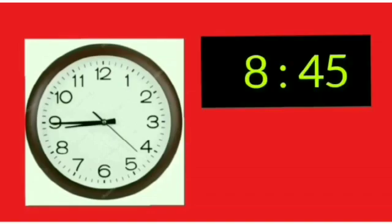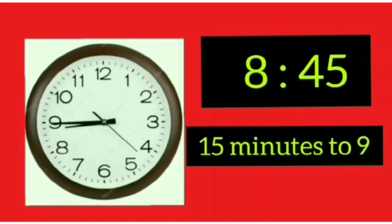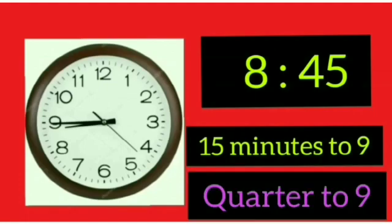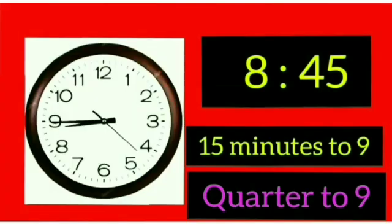Dear students, let us see how to write the same time in two different ways. The time in the given clock is 8:45, so we write 8:45. We also know that 15 minutes are left for 9 o'clock, so we can write it as 'quarter to nine.' As you know, we use the word 'quarter to' for the remaining 15 minutes, so we can write it as quarter to nine.